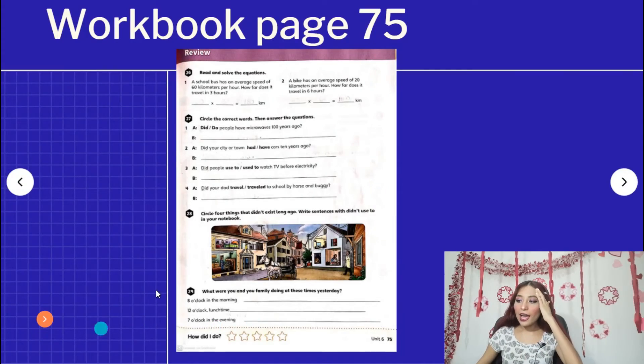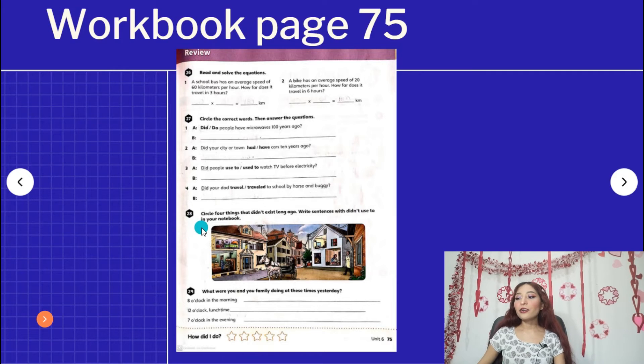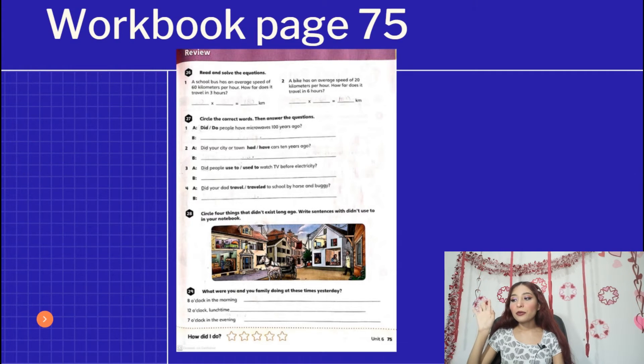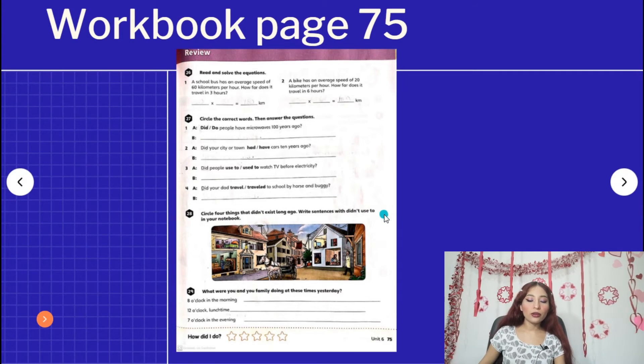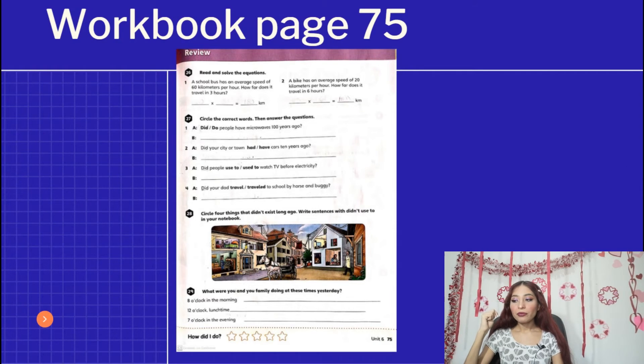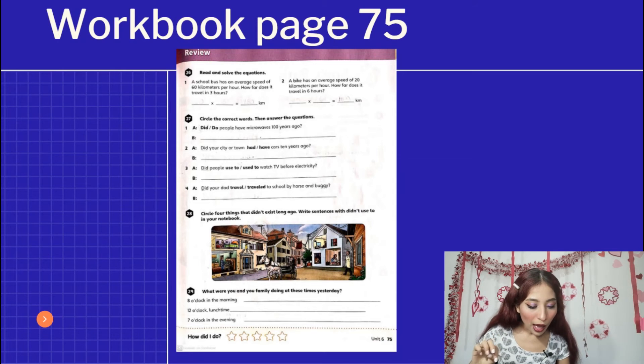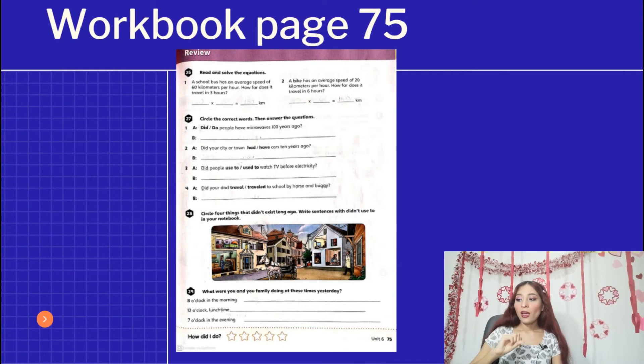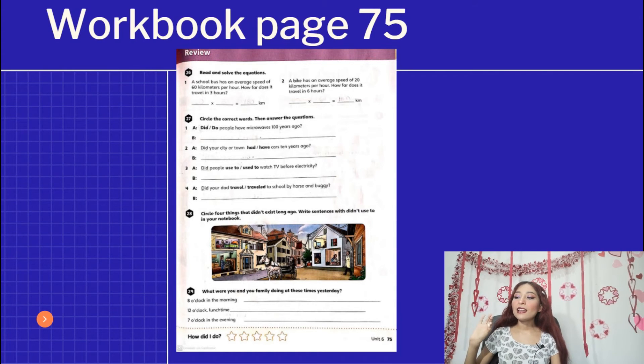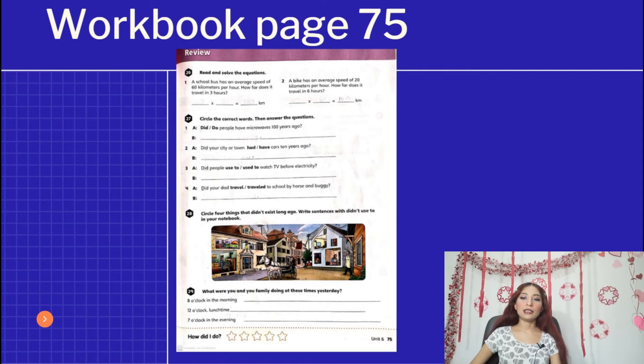I'm looking this way because here I have my laptop. So activity 28 says circle four things that didn't exist long ago. Write sentences. We didn't use to... in your notebook. For example, you have a picture in here. You can, I think you can find more than four. And you're going to write, for example, long ago they didn't use to have TVs. Long ago they didn't use to have electricity.